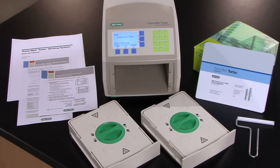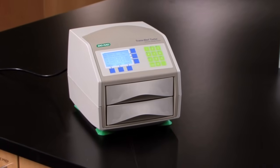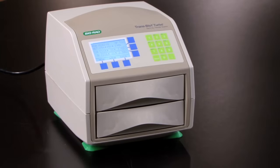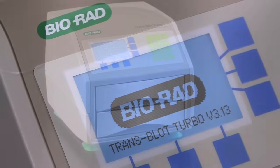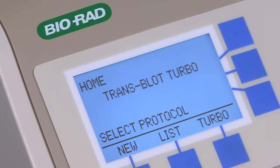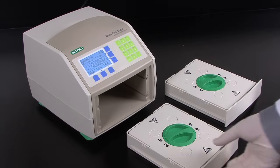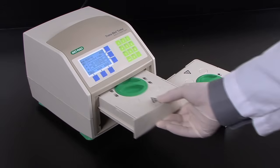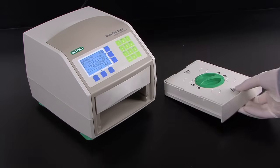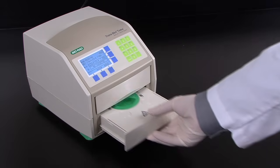When you purchase a trans-blot turbo system, you will receive several items. One item is the base unit, which contains an integrated power supply, eliminating the need for a separate power supply. The unit also includes an LCD screen and keypad, allowing convenient access to the turbo transfer protocols and software features. The unit has two bays that hold the transfer cassettes. Two transfer cassettes are included with each system and additional cassettes can be purchased separately.